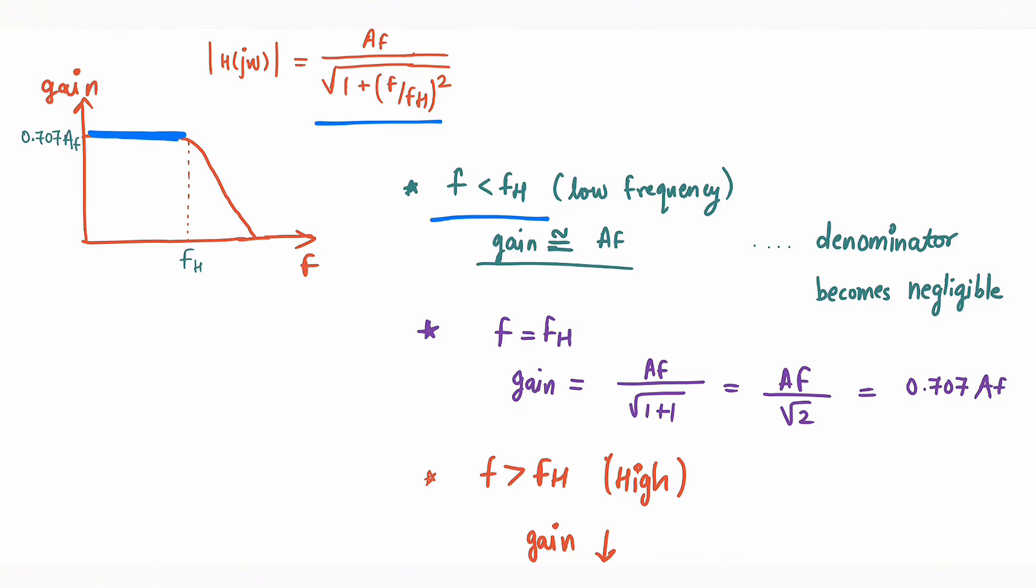The next scenario is your frequency is equal to your cutoff frequency fH. Now in this equation f and fH are equal so it will be one and one square will be one, so your gain will be Af upon under root 2 which is nothing but 0.707 Af. So when your frequency is equal to fH means you are at this point, so at this point your gain is 0.707 Af. You must have seen this number many times and you must be wondering what is 0.707, so now you understand that when f is equal to fH your equation's denominator becomes root 2.